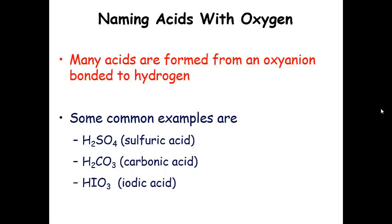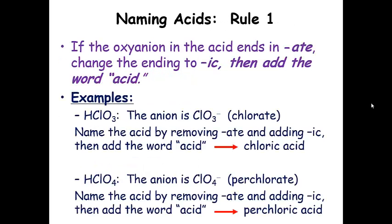Let's learn how to name acids with oxygen first, because that's a little easier. We identify our oxyanions — if you see an oxyanion with hydrogen bonded to it, or H-plus, then you have an acid. Common examples include sulfuric acid, carbonic acid, and iodic acid. Here's the first rule: if the oxyanion in the acid ends in '-ate,' as in sulfate, we change that ending to '-ic.' We hack off the '-ate,' put '-ic' on it, and then add the word 'acid.'